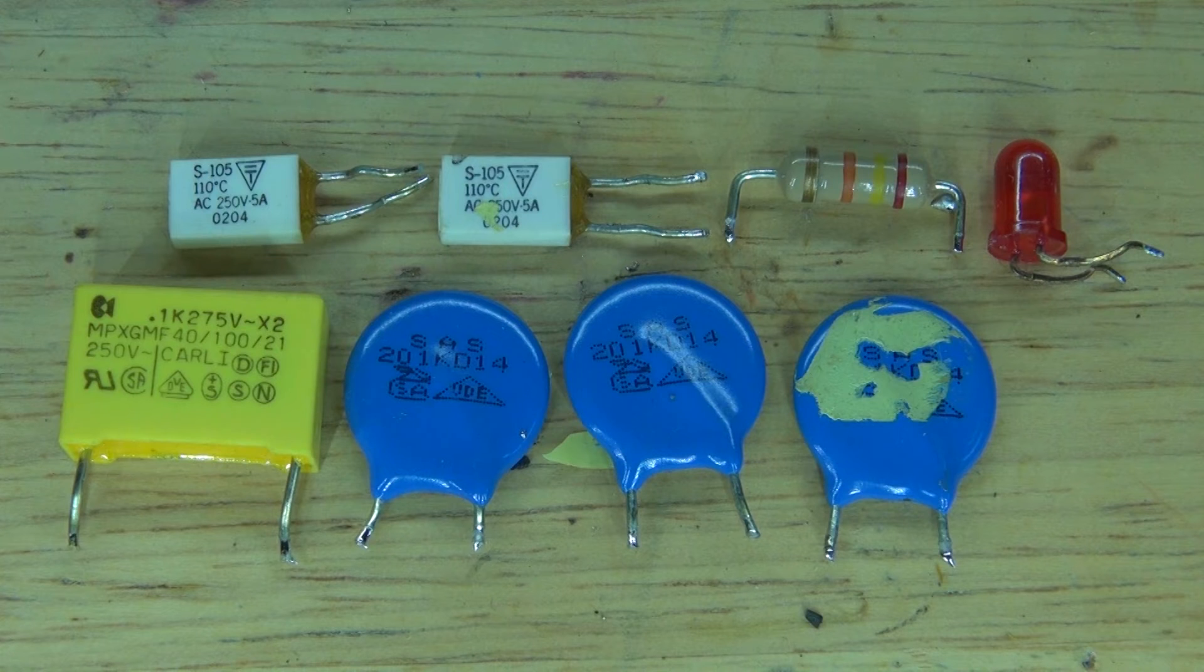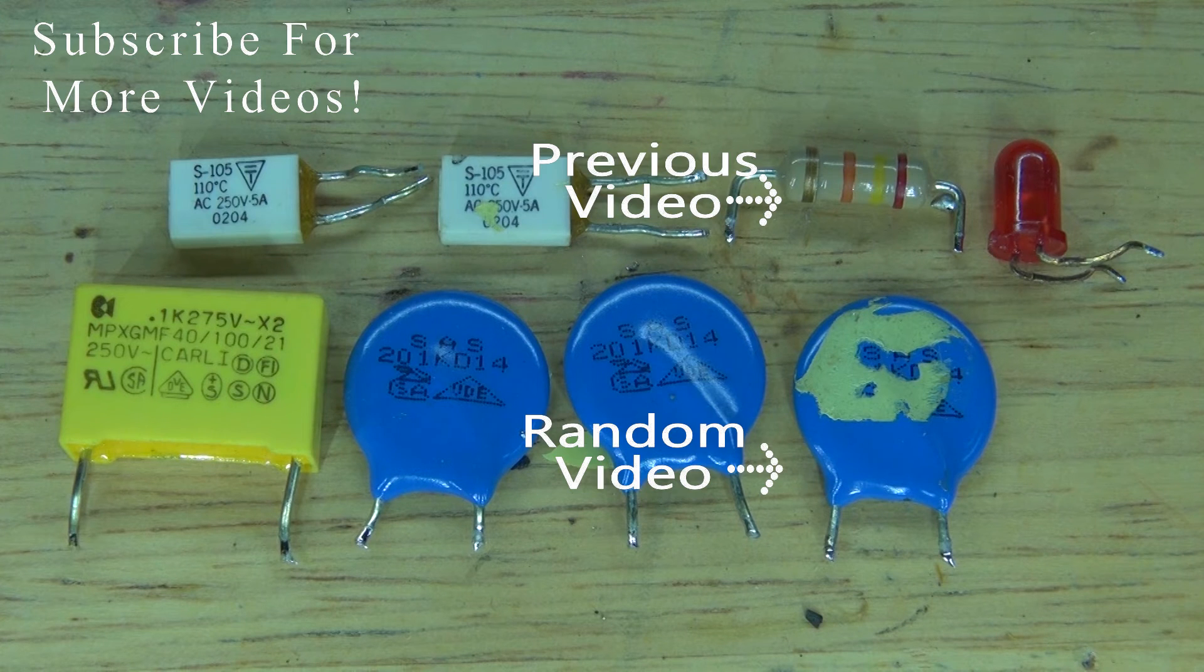On the top right is a 2W 24K ohm resistor and a red LED. And there you have it, now you know what's inside of a power surge protector triple plug wall outlet, and what kind of components are worth salvaging.